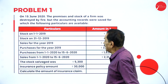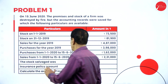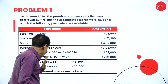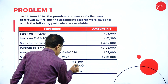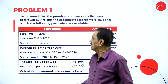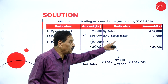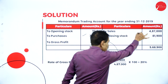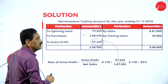Let me explain the problem once again. Stock on 1/1/2019, stock on 31st December, sales for the year, purchases for the year, then purchases from 1/1 to the date of fire, and sales from beginning to the date of fire. Stock salvage is 5,000 and the insurance policy is made only for 30,000. First, prepare the trading account for 2019: opening stock 73,500; purchases 3,98,000; sales 4,87,000; closing stock 81,900. The gross profit is 97,400.